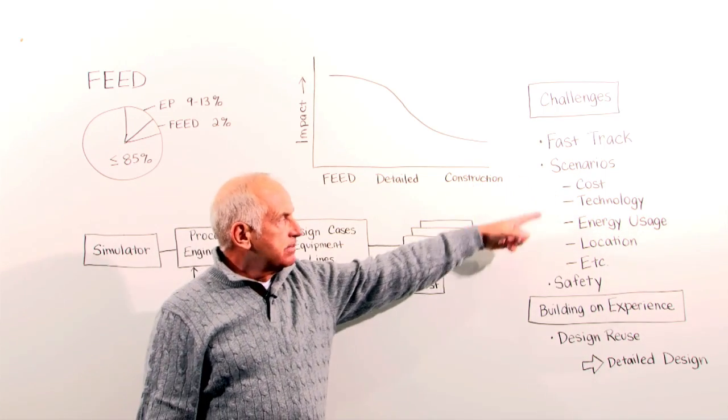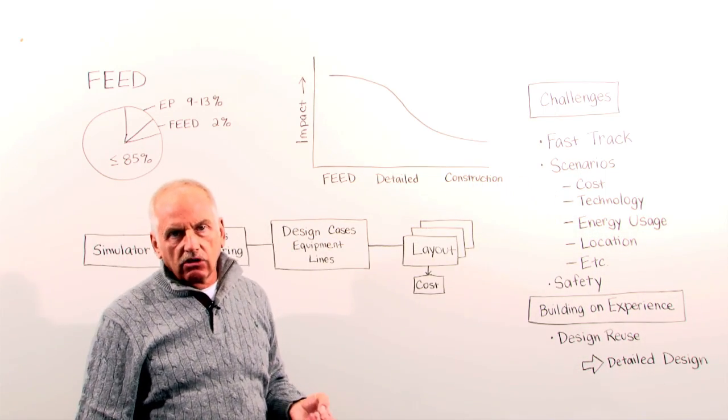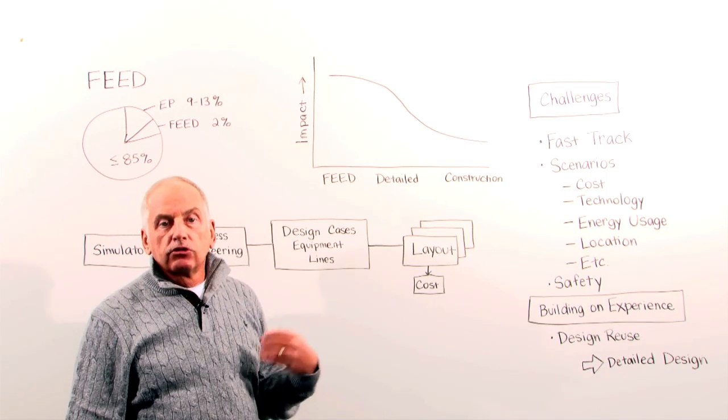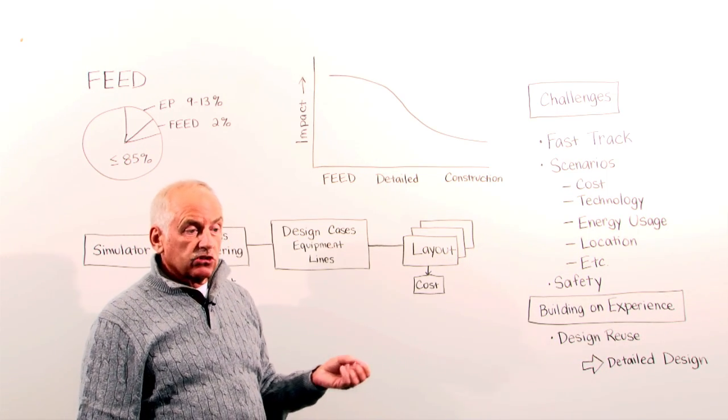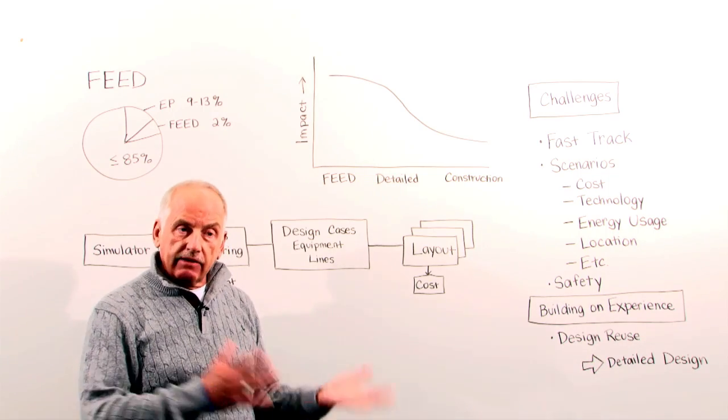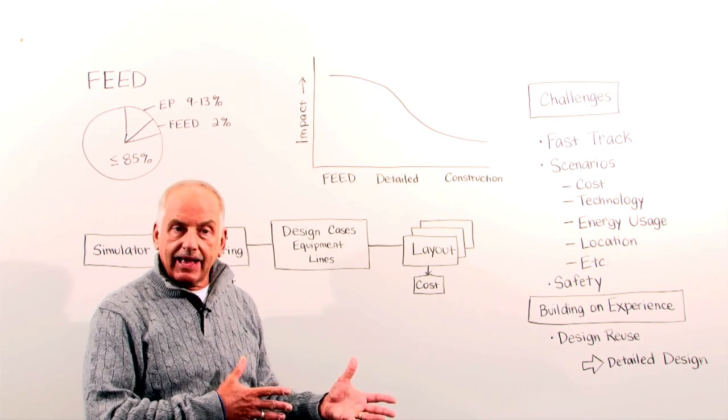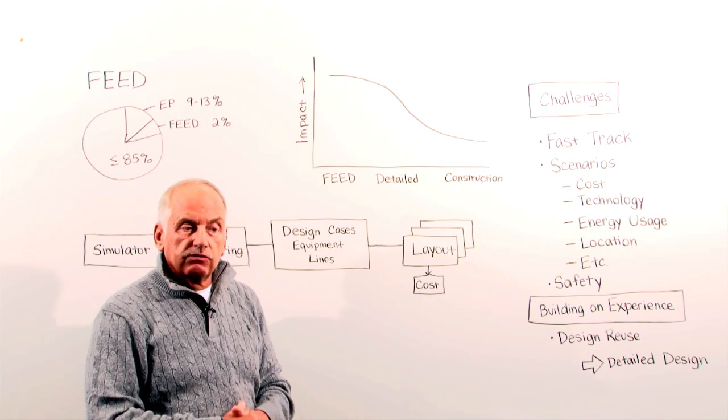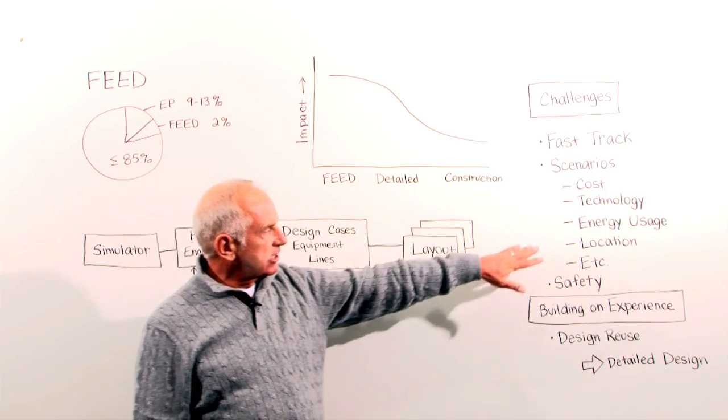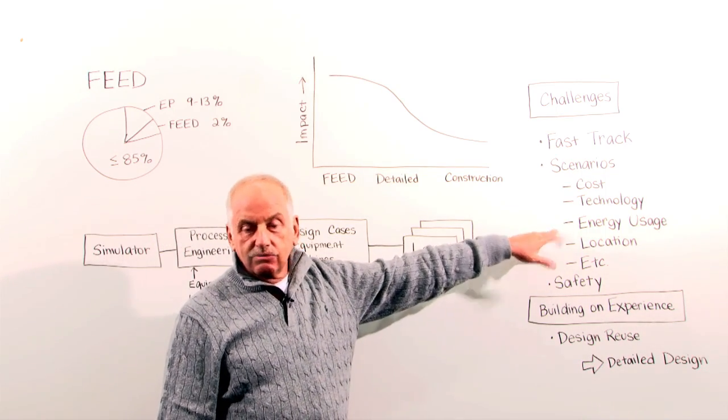Cost is important, but also the technology—what type of technology are you selecting for that particular process? I mean the process technology. That is also something some owners want. They have a certain technology, they have their own technology, or they have done plants that are similar and they reuse that same technology. So you have to take that into consideration as well.